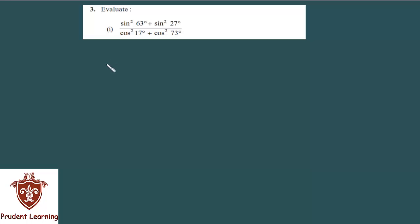Okay let's move on to third question. Evaluate sin square 63 degree plus sin square 27 degree over cos square 17 degree plus cos square 73 degree. I must say this is a very easy question.